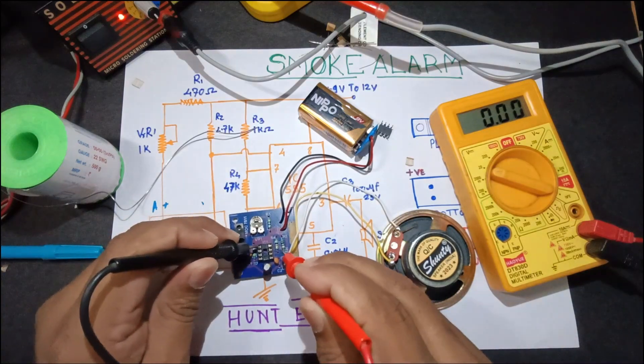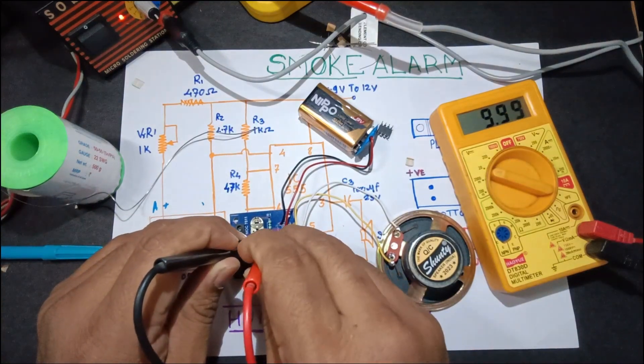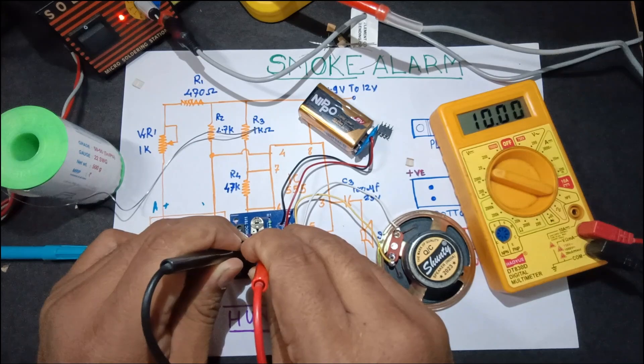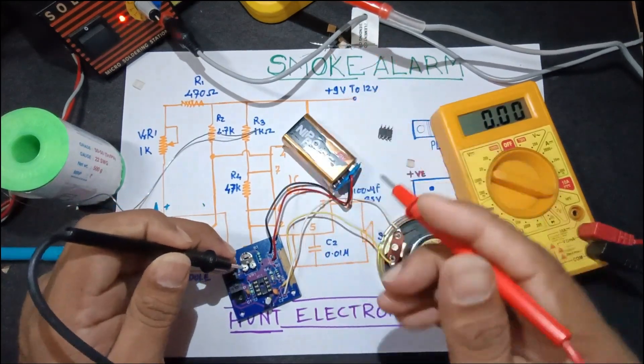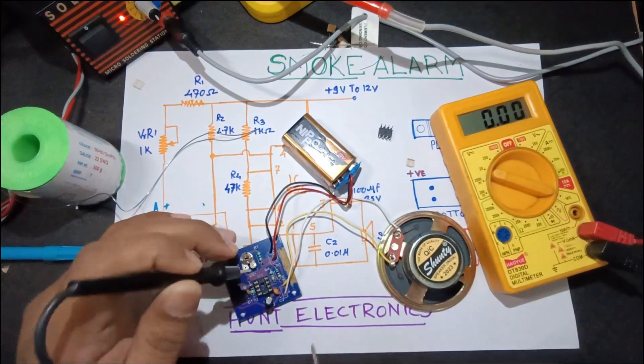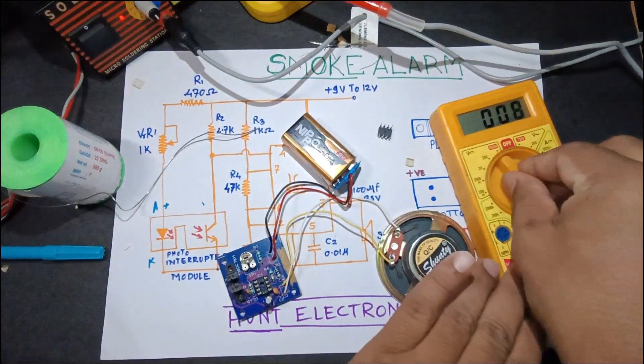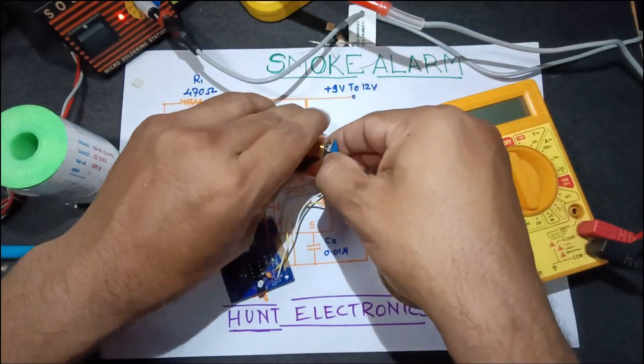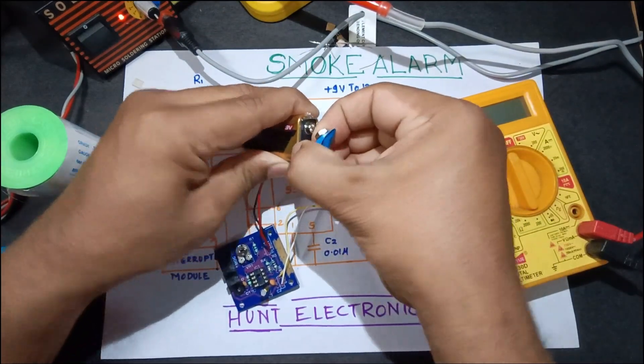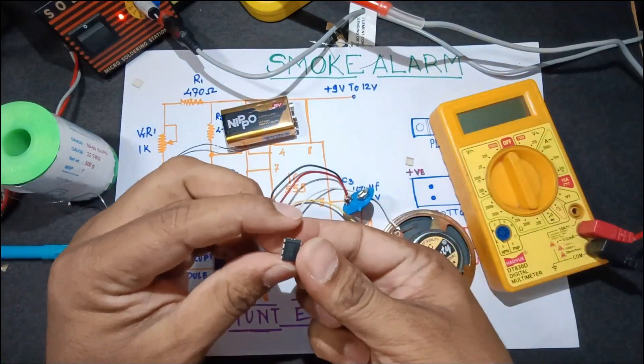Yeah, so it is getting proper voltage with respect to pin number 1 and 8. Pin number 1 is ground and with respect to that, pin number 3 is okay. So once it is confirmed that nothing is short, we'll disconnect the battery and place the timer IC 555.